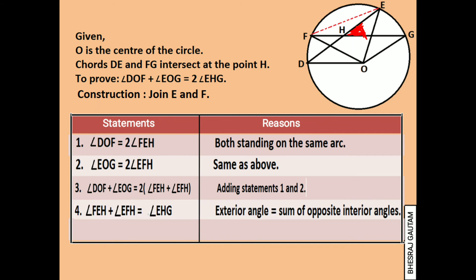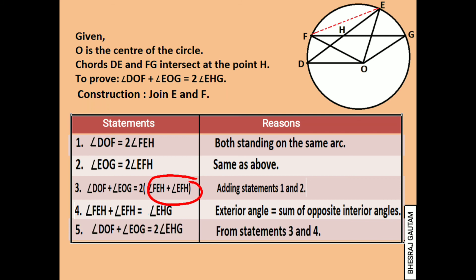So we can write that angle FEH plus angle EFH is equal to angle EHG. Finally, if we replace the right-hand side of statement 3 with angle EHG from above, we get angle DOF plus angle EOG is equal to 2 times angle EHG, which is our required condition to be proved.